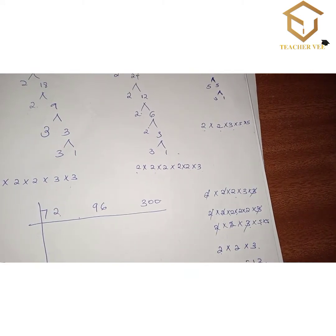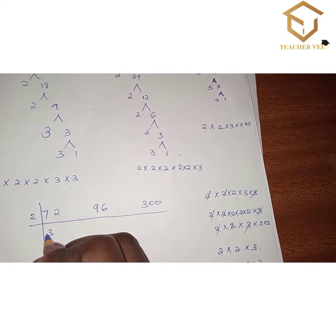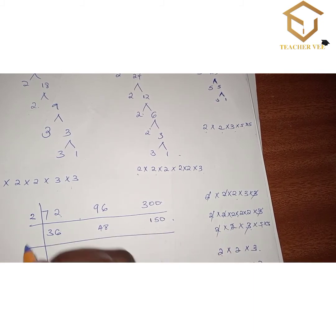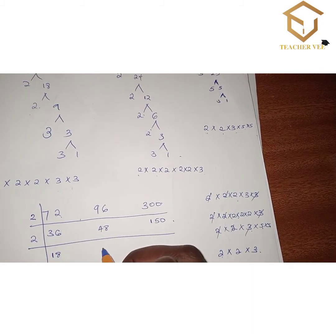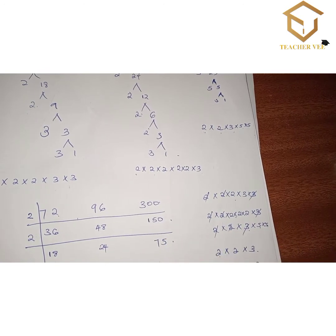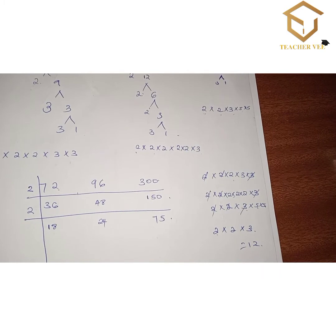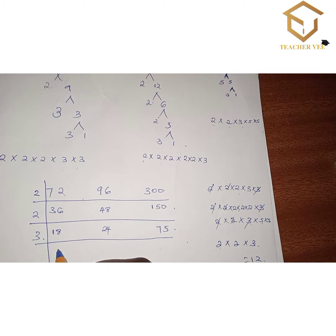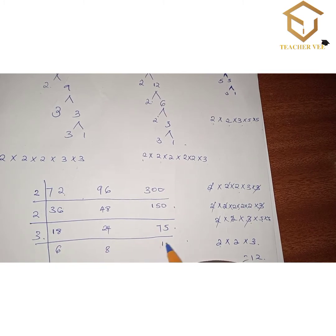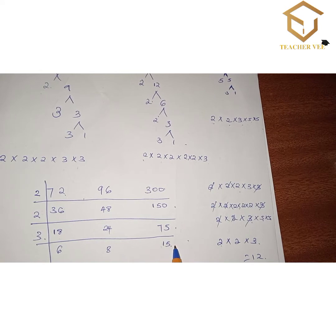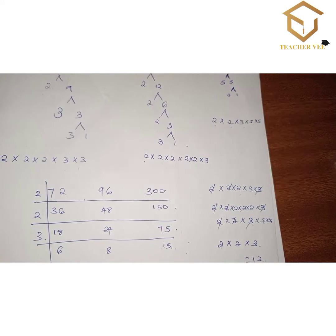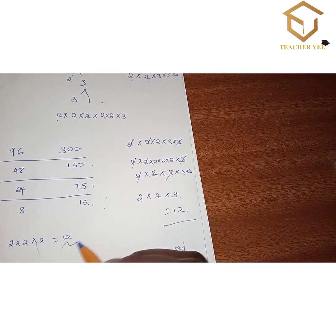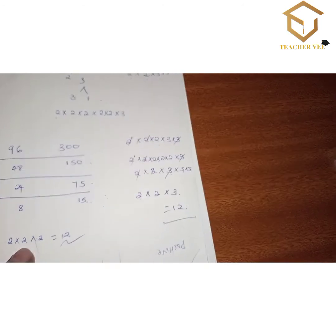That gives us the GCD, which is 12. Let's check using the division table. Divide by 2: you get 36, 48, 150. Divide again by 2: you get 18, 24, 75. It is no longer divisible by 2 because of 75. So divide by 3: you get 6, 8, 15. There is no other number that can divide 6, 8, and 15, so the answer is 2 × 2 × 3 = 12.